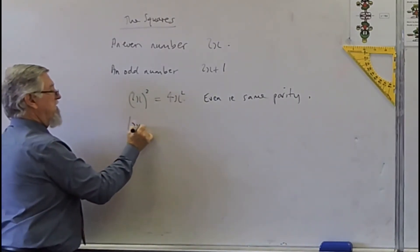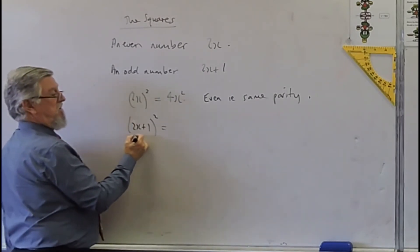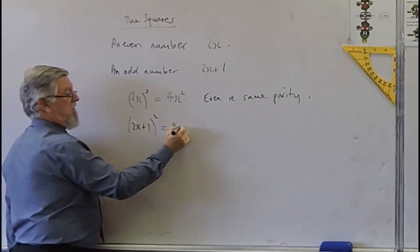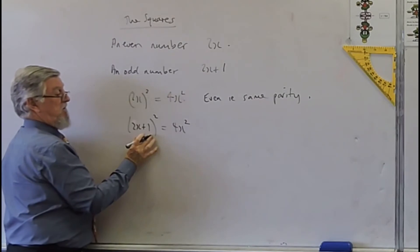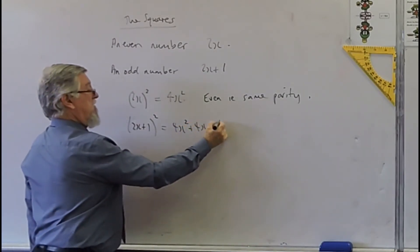So 2x plus 1 squared. Square it in your head: 2x squared is 4x squared, right? Yep. Multiply them and double it: 4x. Yep. Plus 1. Plus 1.